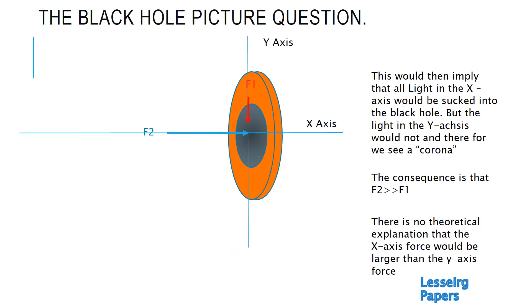So what does that actually mean? If the black hole has a corona around it, that means all the light in the X-axis would be sucked into the black hole, but the light in the Y-axis would not, and therefore we see a corona.